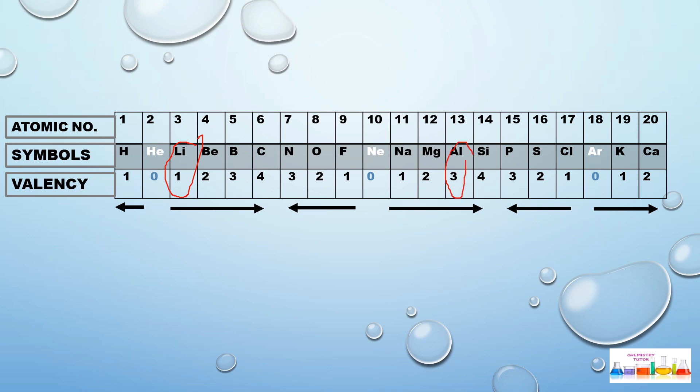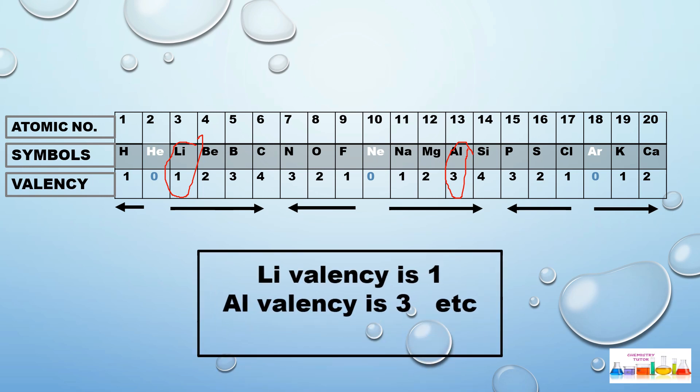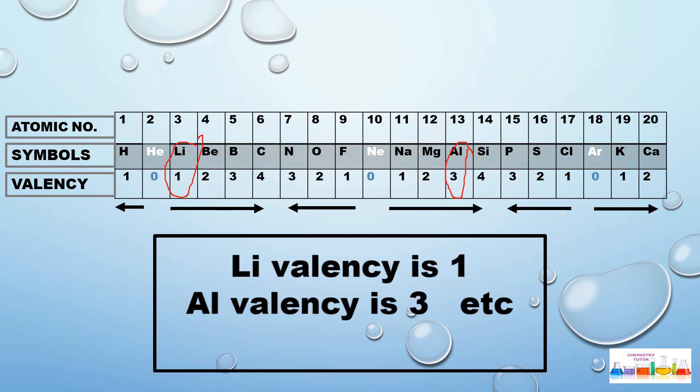If we take aluminum, it is written 3 in front of aluminum. It means that the valency of lithium is 1, the valency of aluminum is 3. So in this way you can learn very easily the valency of the first 20 elements.